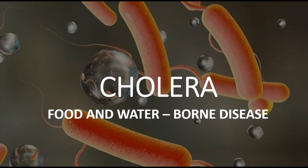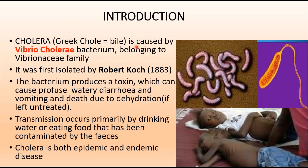We are going to discuss cholera, which is one type of food and waterborne disease. Cholera is caused by a bacterium called Vibrio cholerae, belonging to the family Vibrionaceae. In Greek, 'chol' means bile. This cholera-causing bacterium was first isolated by Robert Koch in 1883. Cholera produces a toxin that causes profuse watery diarrhea, vomiting, and even death due to dehydration if left untreated. It is transmitted mainly through contaminated water and food via fecal matter, and is considered both an epidemic and endemic disease.